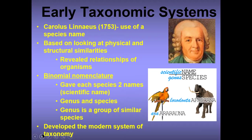Linnaeus used something called binomial nomenclature, which gave each species two names — just like us, you have two names. There was a genus name and a species name. The genus is a group of similar species. He developed the modern system of taxonomy, which is what we really use right now.